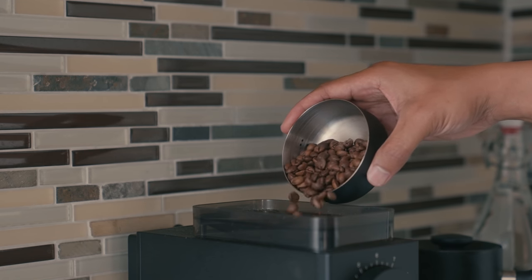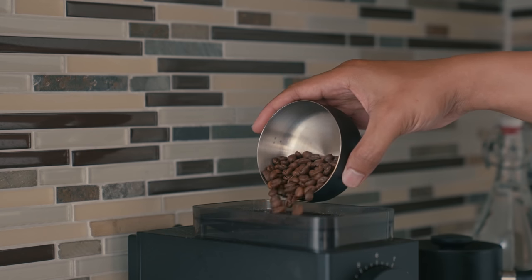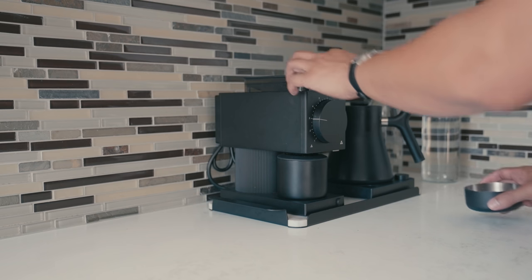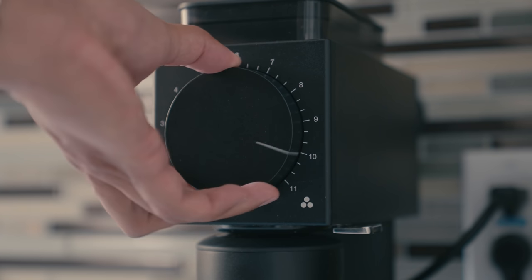The next thing to consider is grind size. Since cold brew brews for a longer time, you'll want to use an extra coarse grind. For the Fellow Ode grinder, I use the coarsest setting of 11.